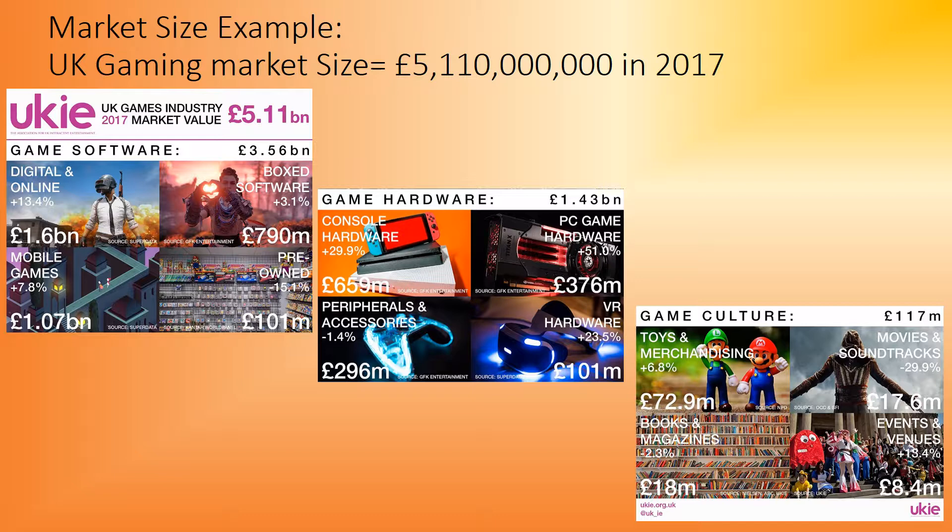Obviously the most money in gaming is in software itself. But there are lots of companies that specialise purely in hardware — companies like Nintendo, Microsoft, and PlayStation, plus PC specialists, concentrate on the hardware side. Meanwhile companies like EA or Ubisoft focus on software. And don't forget there's a whole other market such as merchandising, movies, and events like Comic Con that also take advantage of different sections of the overall market.